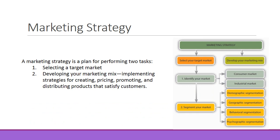A marketing strategy is a plan for performing two tasks: one, selecting a target market, and two, developing your marketing mix — implementing strategies for creating, pricing, promoting, and distributing products that satisfy customers. You have to figure out who you're going to sell to and what your product is before you really start any of the marketing work.